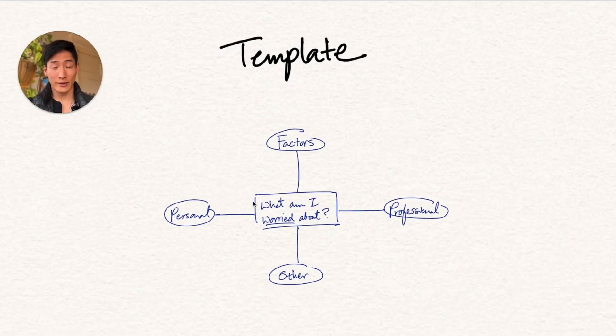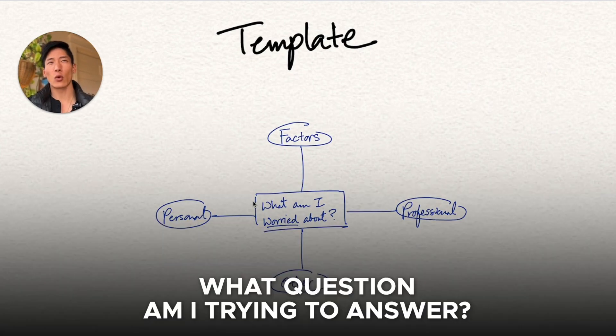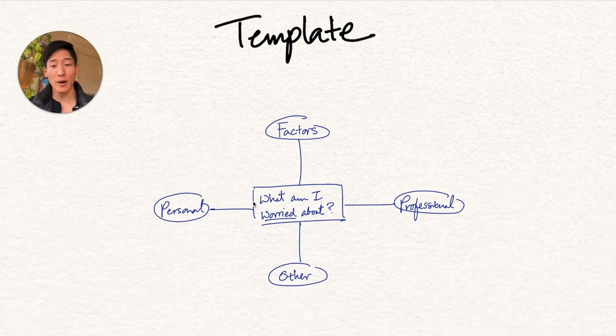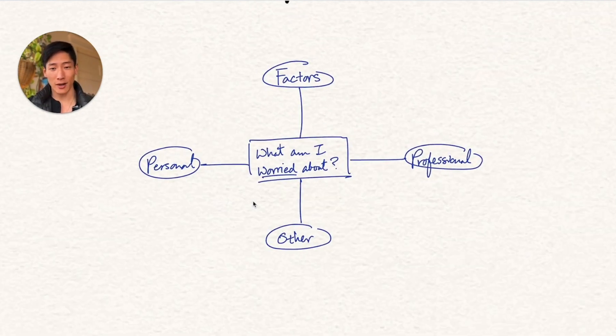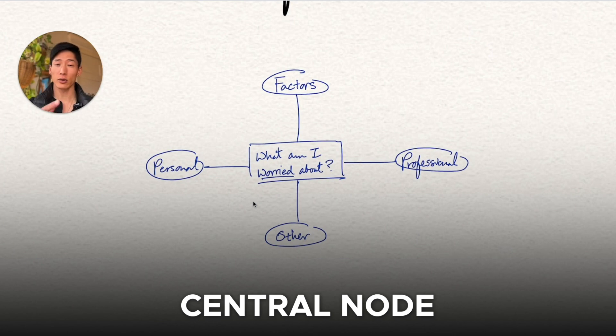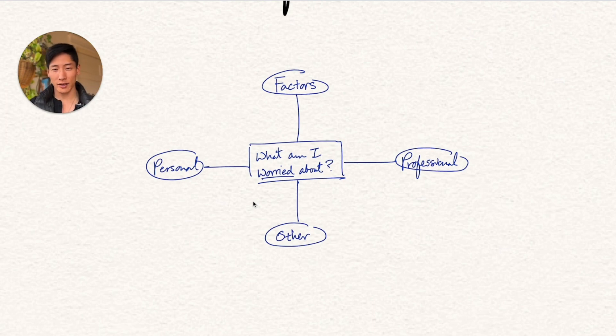All right, so let's start with the template. What I like to do before mind mapping everything is actually to ask, what question am I trying to answer? In this case, it's what am I worried about? And then I write this question in the middle of the page, draw a box around it, and that's what's called the central node.